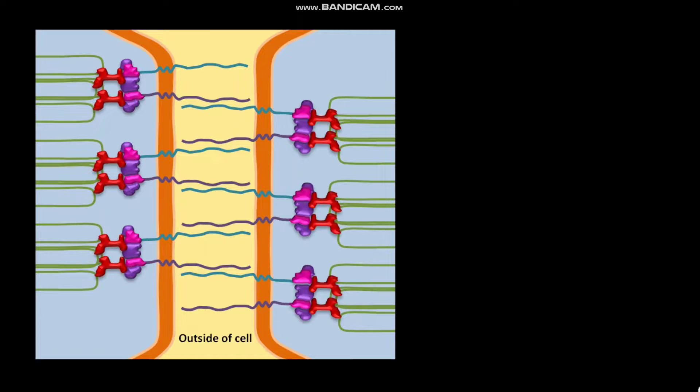In desmosomes, the desmosomal catherines like desmoglaene and desmocoline link to intermediate filaments.